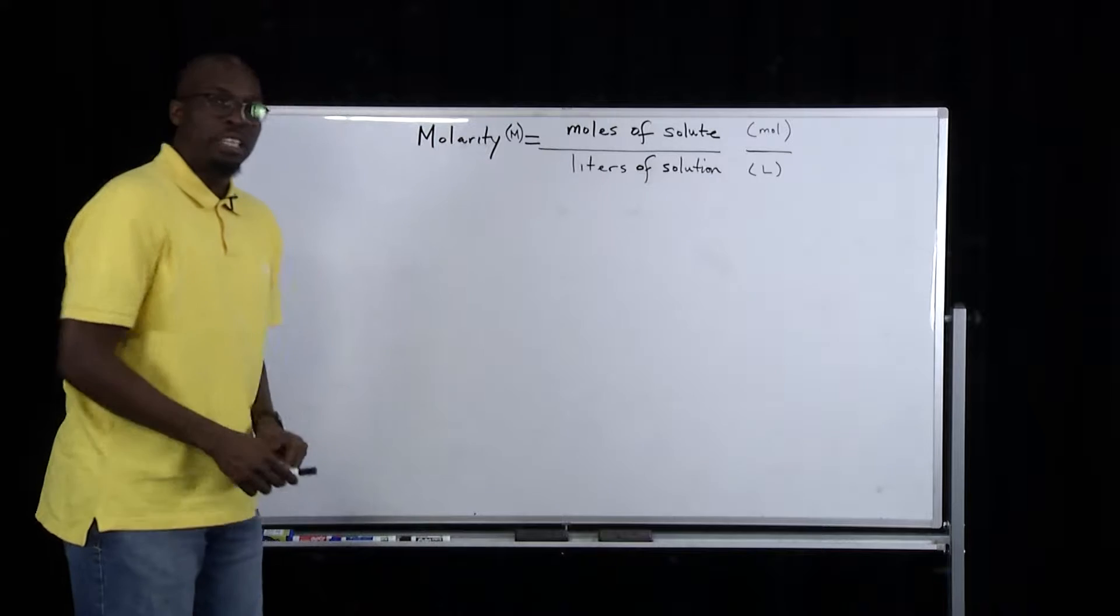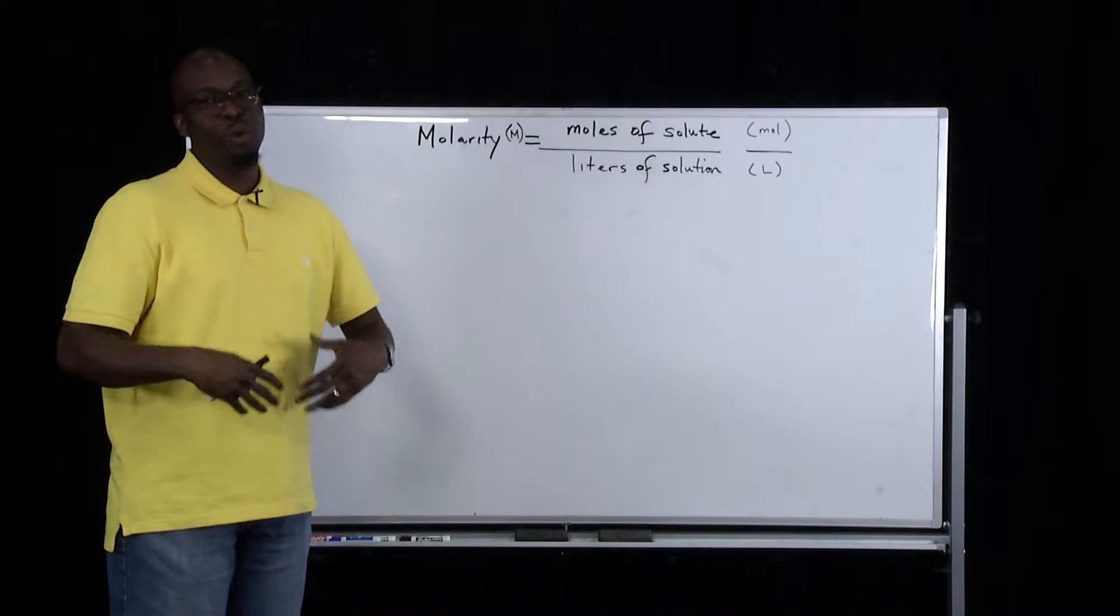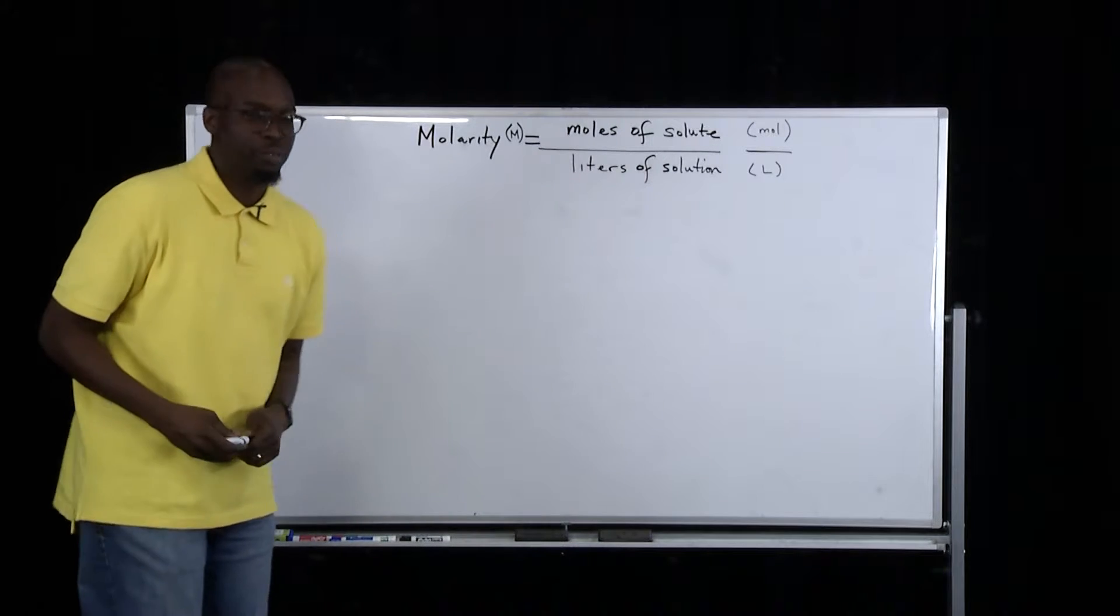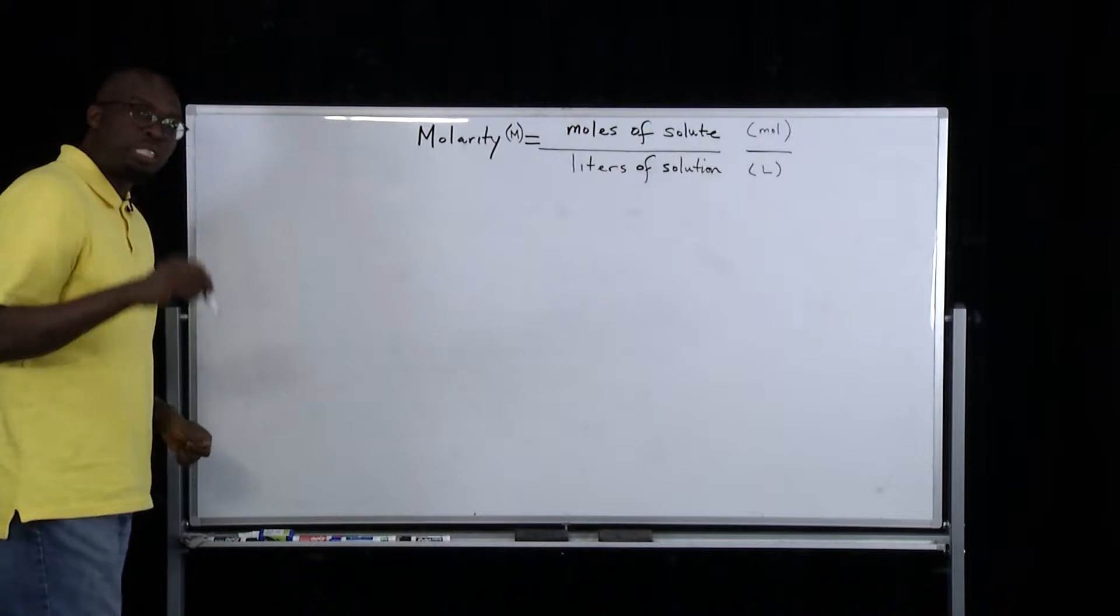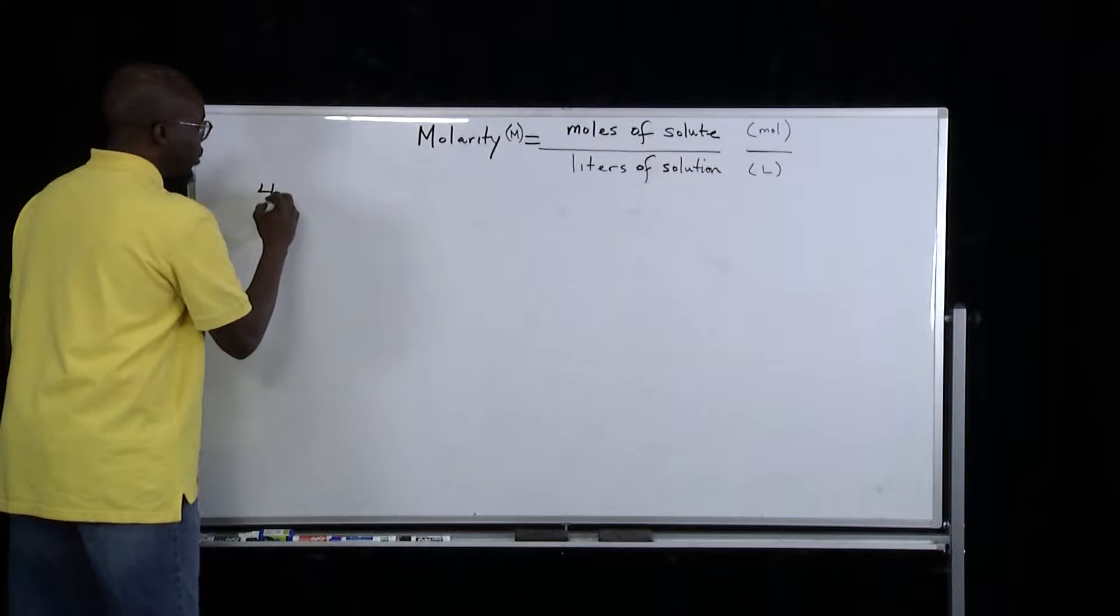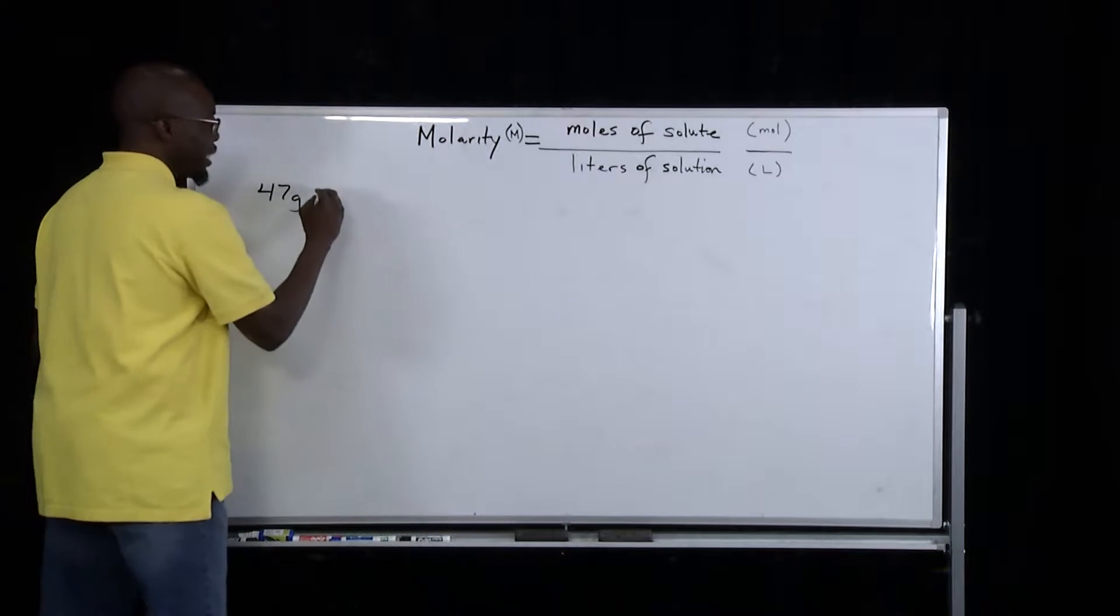In order to solve this problem, we have to extract information from the question in order to get to where we need to go. The first piece of information that's given is the fact that we have 47 grams of potassium chloride.